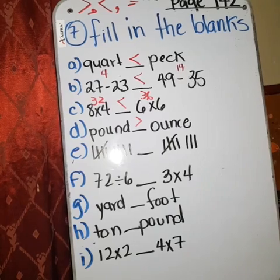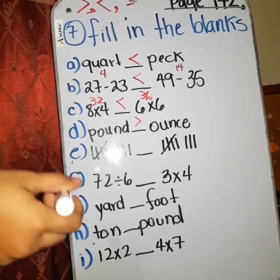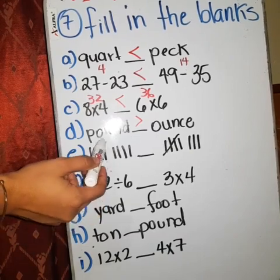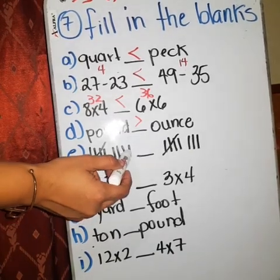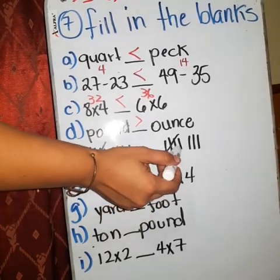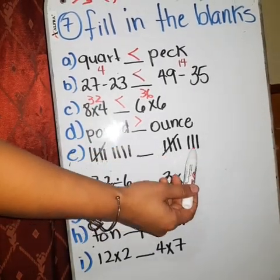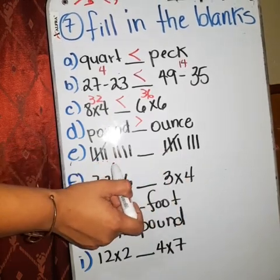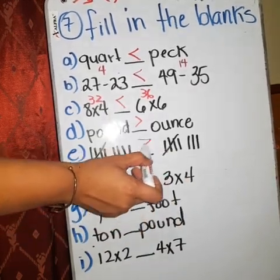Now here, pay attention here, what you're going to do in the letter E, you're going to count 1, 2, 3, 4, 5, 6, 7, 8, 9. How many sticks? 9. And here 1, 2, 3, 4, 5, 6, 7, 8. 9 here and 8 here. 9 is greater than or less than? Greater than.